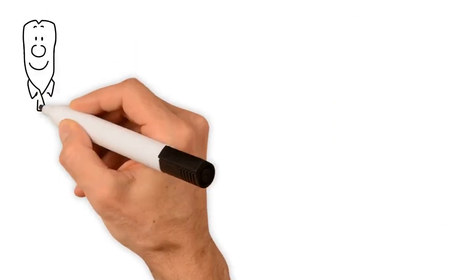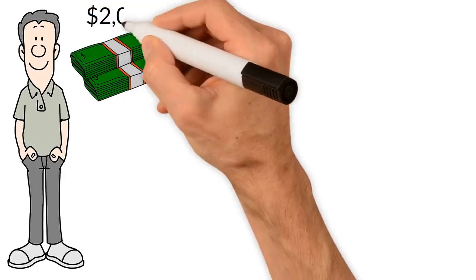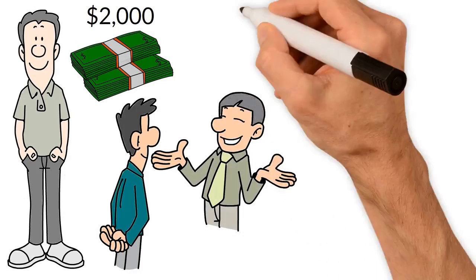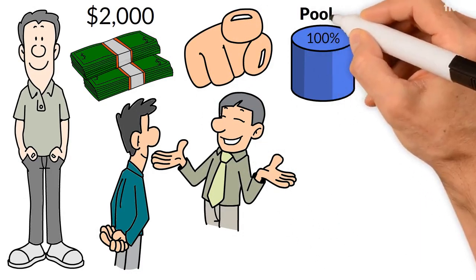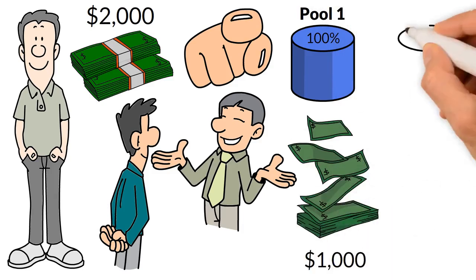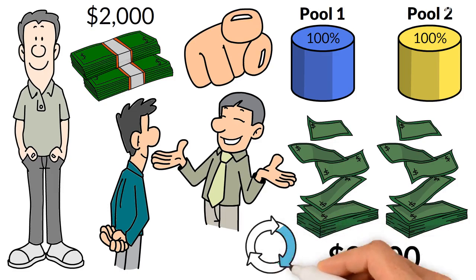As an example, let me take a person who can afford to qualify at the $2,000 level, and he sponsors someone who does the same. You, the sponsor, would receive 100% of Pool 1, which would be $1,000, and 100% of Pool 2, which would be another $1,000, for a total of $2,000. This could happen over and over.